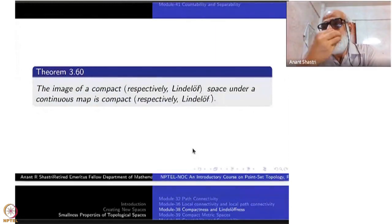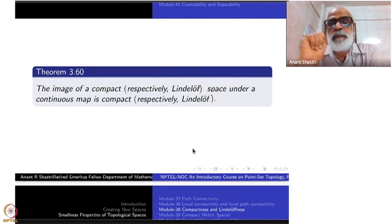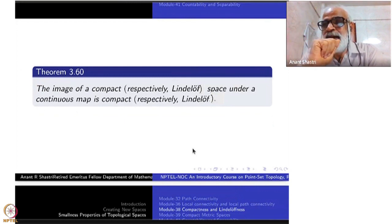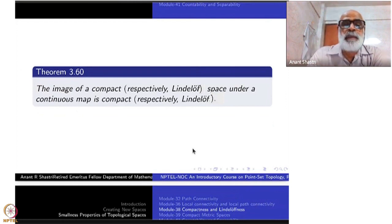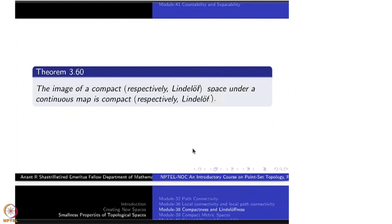The next immediate result: under a continuous map, compactness and Lindelofness are preserved. If f from X to Y is a continuous map and X is compact, then f(X) is compact. If X is Lindelof, then f(X) is Lindelof. Just like connectivity and path connectivity. This immediately means that under homeomorphisms, compactness and Lindelofness are preserved — in other words, we have topological properties.